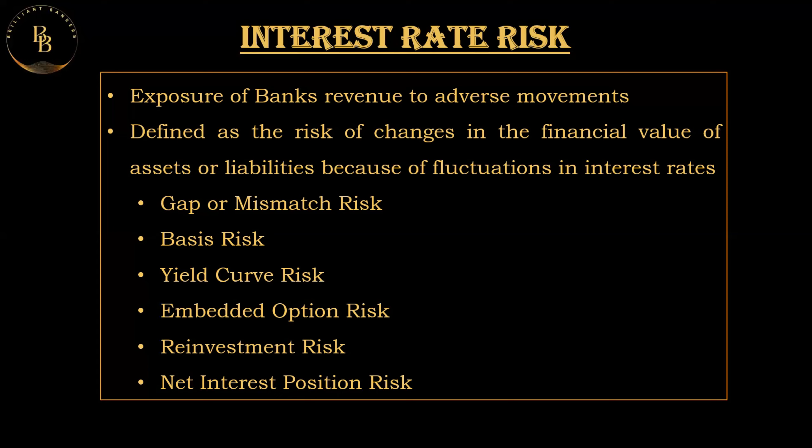The different types of interest rate risk are: gap or mismatch risk, basis risk, yield curve risk, embedded option risk, reinvestment risk, and net interest position risk. Gap or mismatch risk refers to the potential for losses due to imbalances or gaps in the maturity or repricing of assets and liabilities. It occurs when the interest rate sensitivity of assets and liabilities is not aligned — for example, if a bank has more liabilities repricing in the short term than assets, and the interest rate rises, the cost of liabilities may increase more quickly than income from assets.